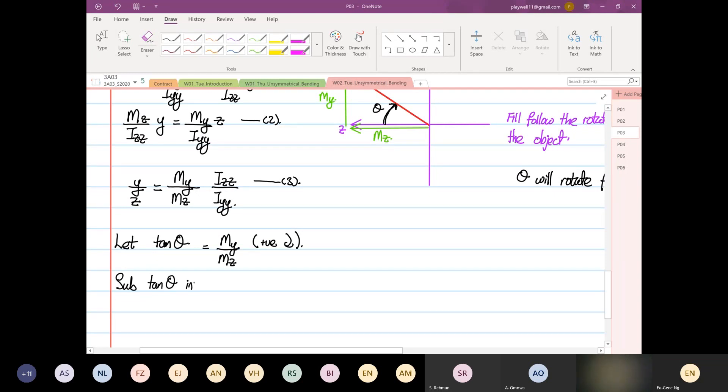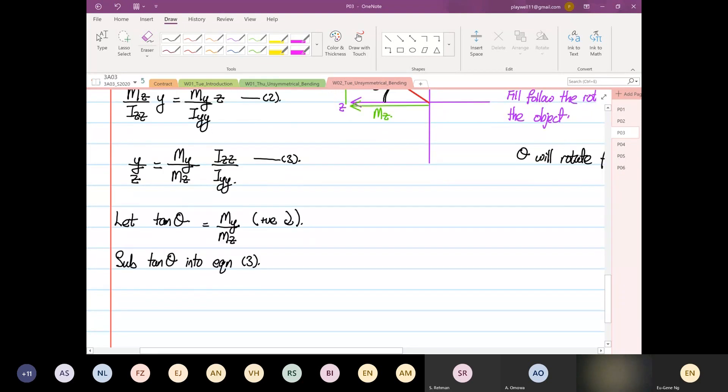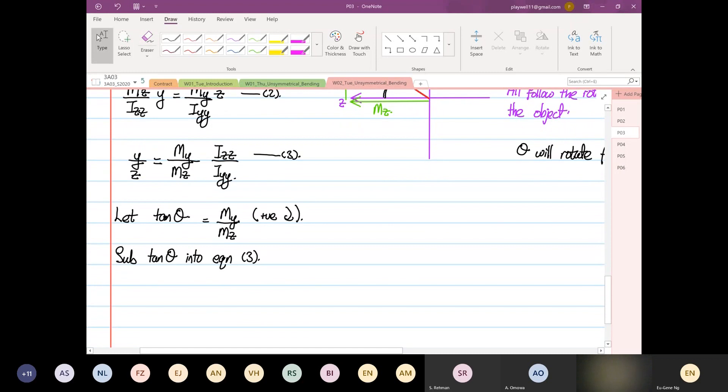Into equation three. And then from here we know that Y over Z is equal to tangent theta multiplied by Izz over Iyy. So this is our equation number four.